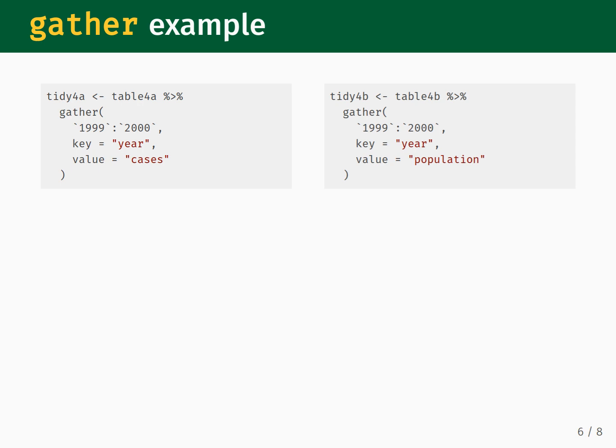Here is the code that implements the reshaping process. We take Table 4A and pipe it into gather. We specify the columns we wish to turn into rows, which is the range `1999`:`2000`. Note that since the column names 1999 and 2000 are numbers, we need to surround them with backticks so that the gather function correctly understands them to be column names. Next, we specify the key input — the name for the column that will have the years 1999 and 2000 under it — we will name it year. Finally, we specify the value input as cases, which will store the number of tuberculosis cases.